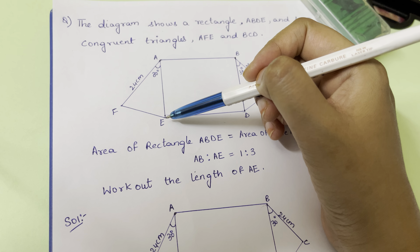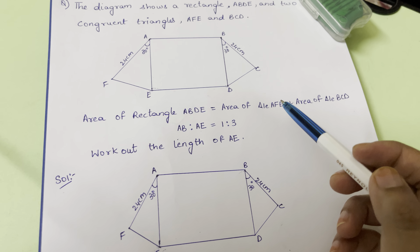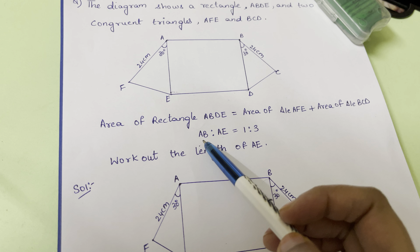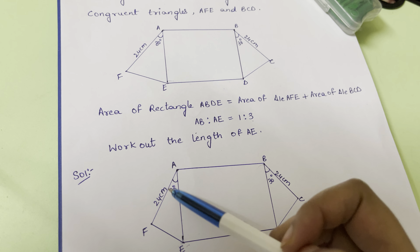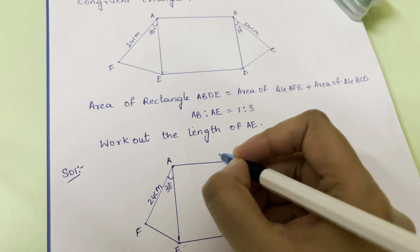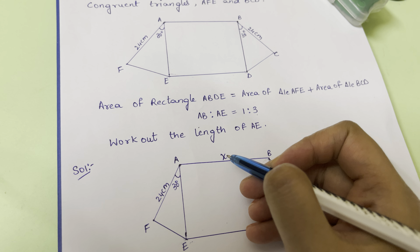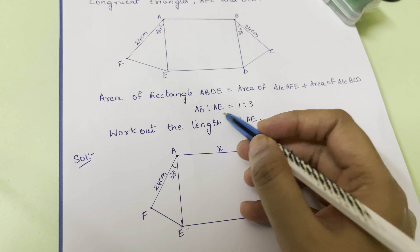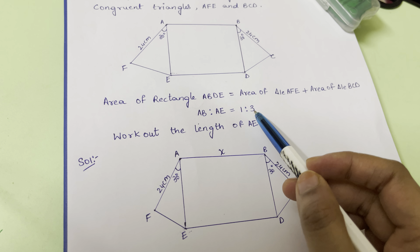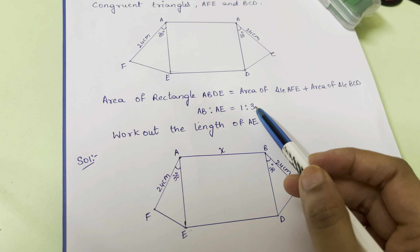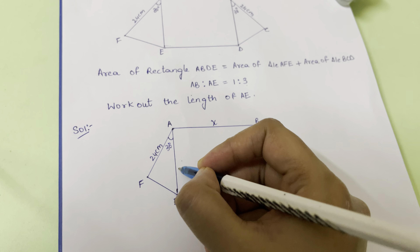Our first step: since AB to AE equals 1:3, we consider AB as x. Then AE is 3 times AB, so AE equals 3x.